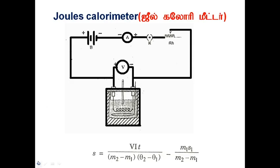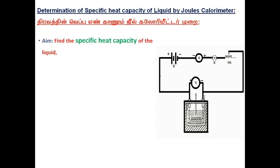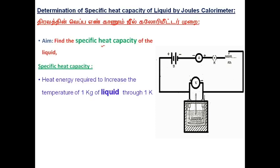Today we are going to learn about Joule's calorimeter. This experiment is used to find the specific heat capacity of any liquid. What is specific heat capacity? Specific heat capacity means heat energy required to increase the temperature of 1 kg liquid through 1 Kelvin.